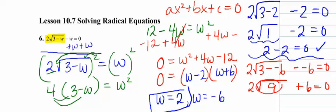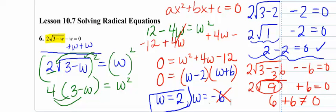The square root of 9 is the value 3. 2 times 3 is 6. But when I do 6 plus 6, I get 12, not 0. So this is an extraneous solution. So the only true value for W would be 2.